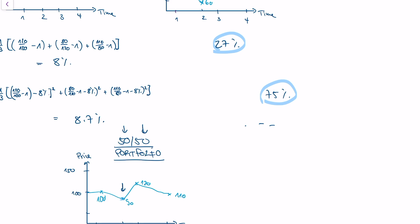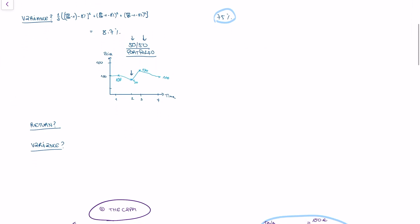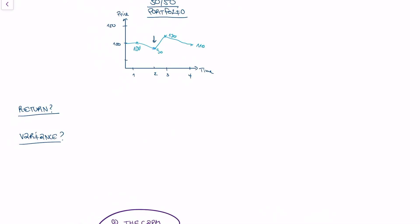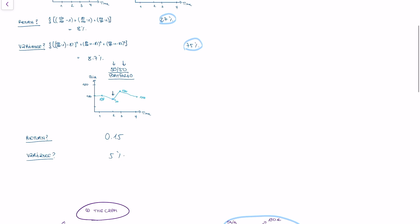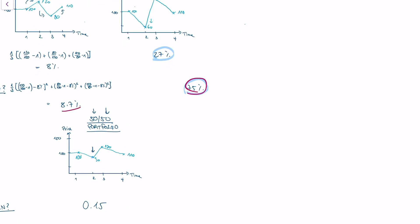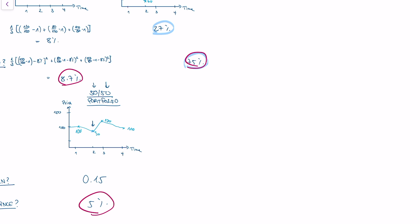Okay, so for this time series, I can once again calculate return and variance. So now we're talking about return and variance of the portfolio. And what I get is I get a return of 0.15 and a variance of 5%. So what is the remarkable thing now? We have two stocks, and both of those stocks have a higher variance than the portfolio itself. Portfolio has a variance of 5%, but the stocks have a variance of 8.7% and 75%. And this is what we call diversification.